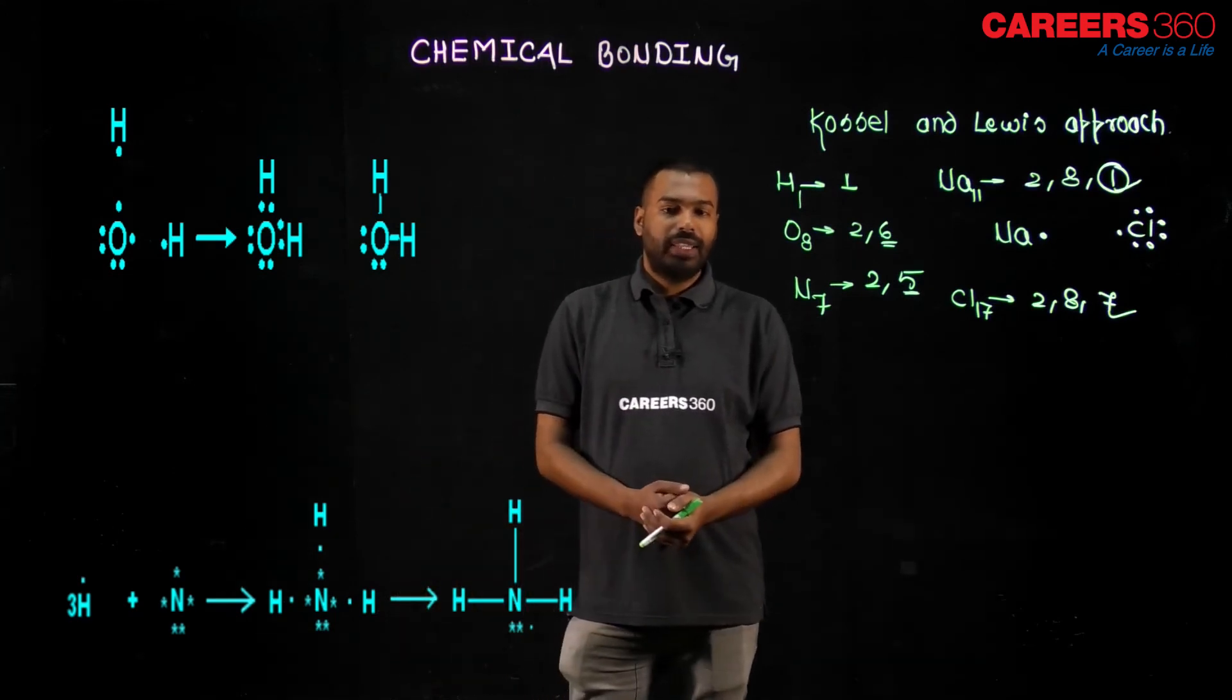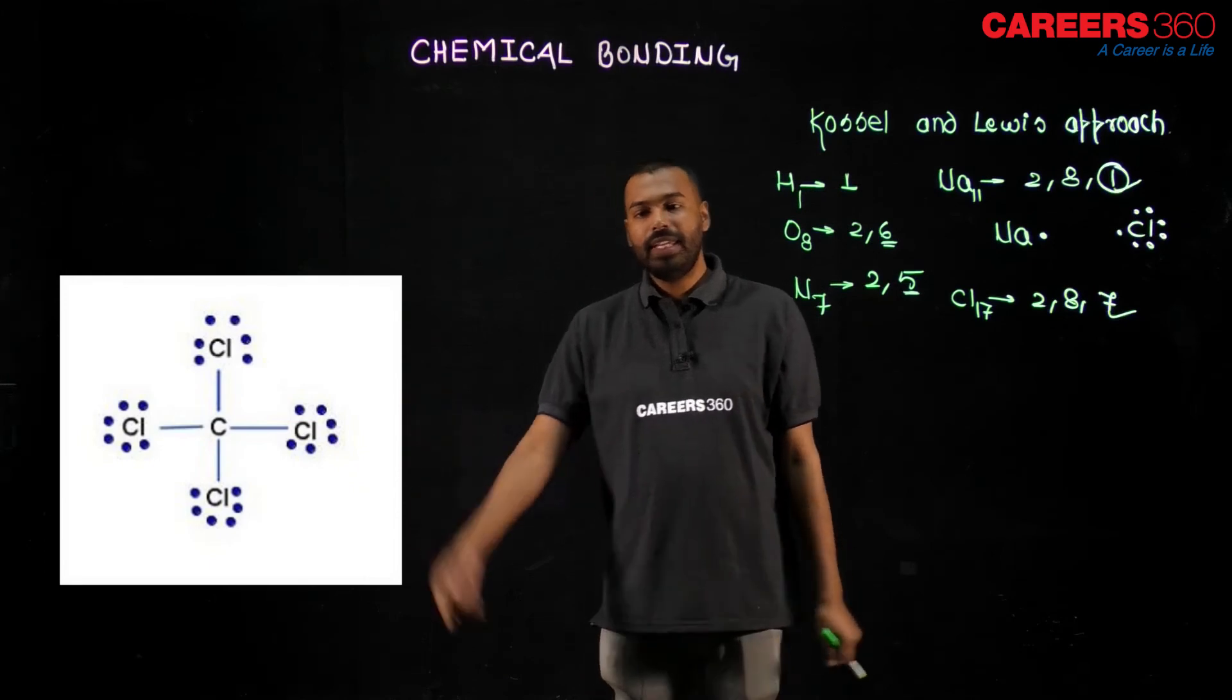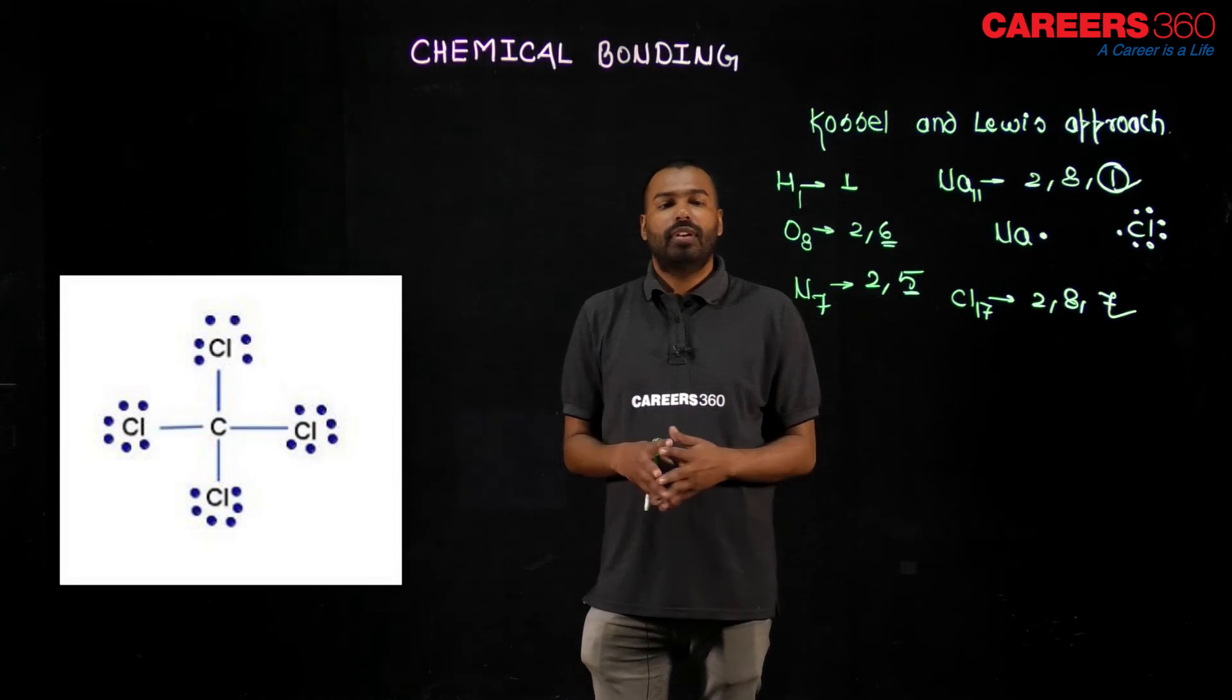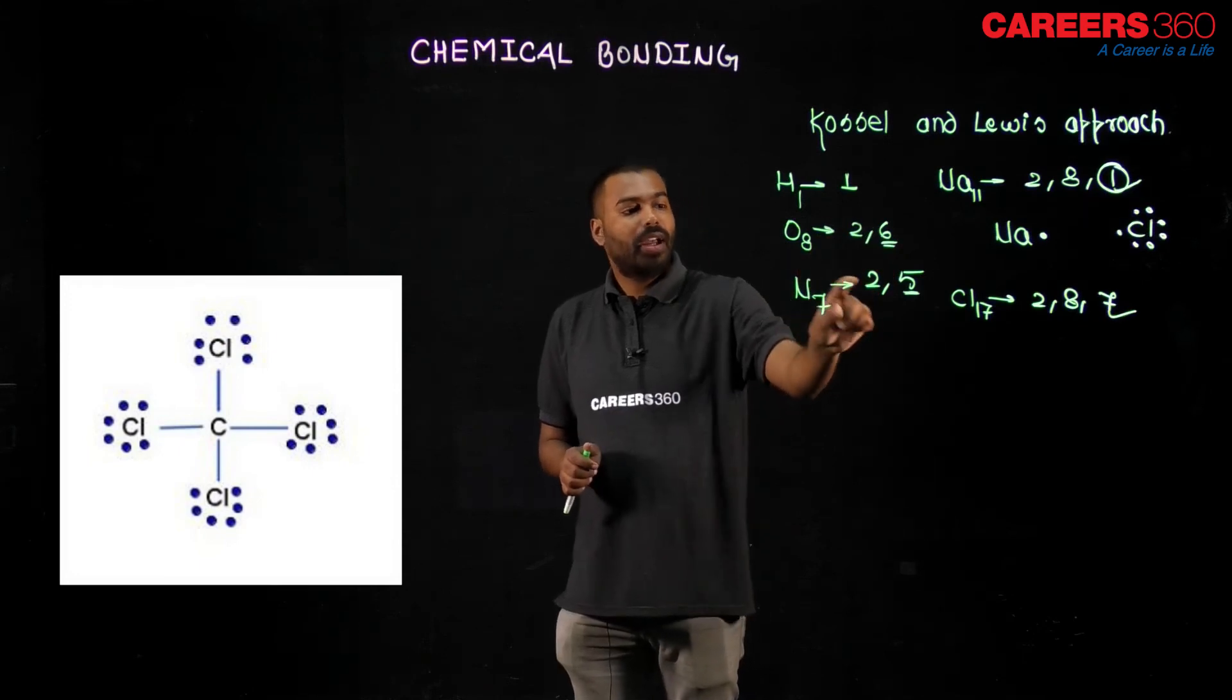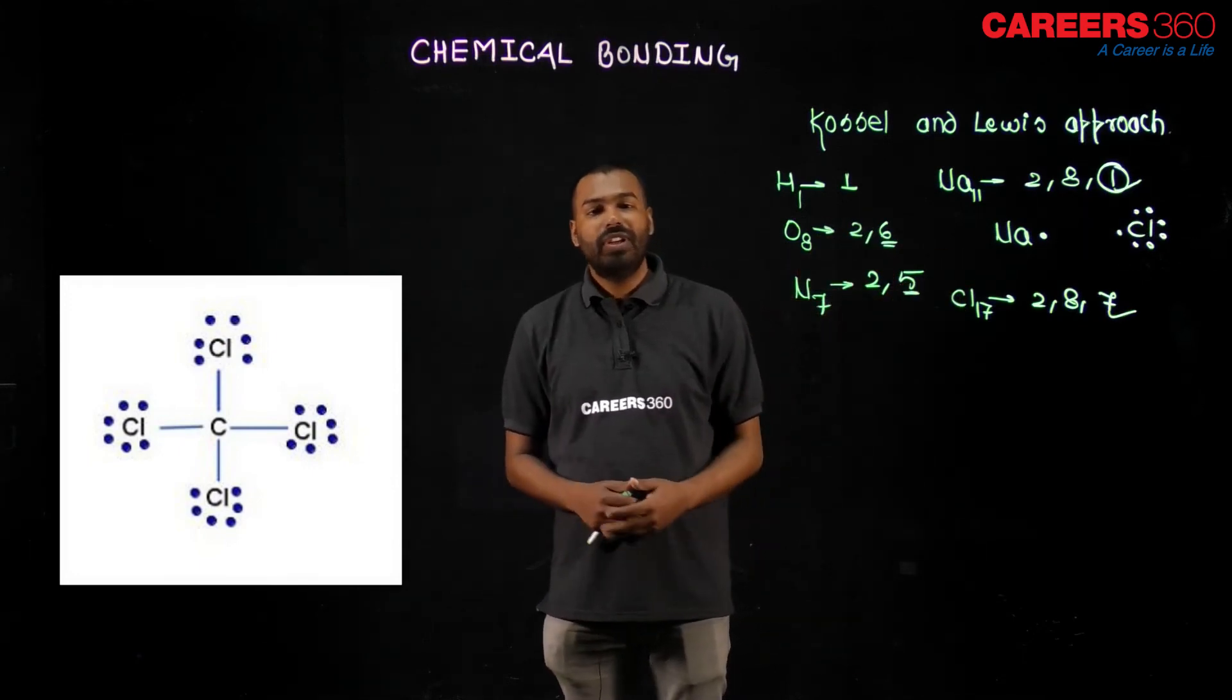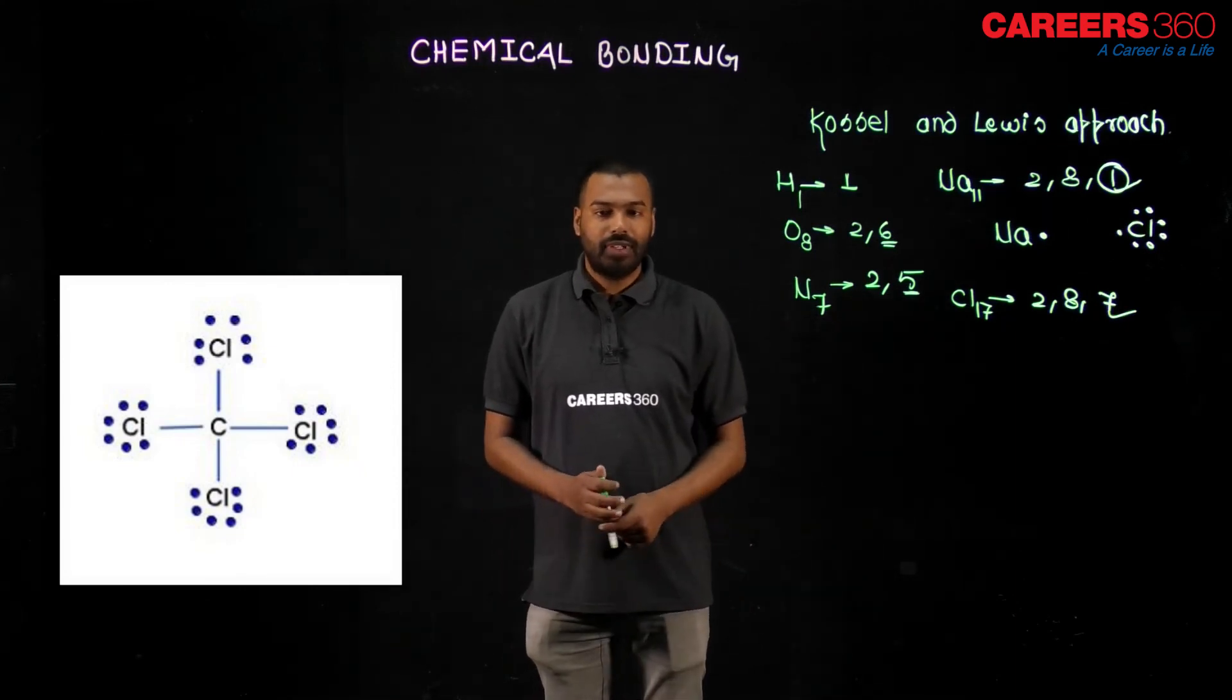Let us see the example of CCl4 now. See, this is the Lewis dot structure of CCl4. Kossel and Lewis approach mainly says that you put the valence electron number dot around the symbol of element. That is it. So this is how we completed our Kossel and Lewis approach. I hope you enjoyed the lecture. Thank you for watching.